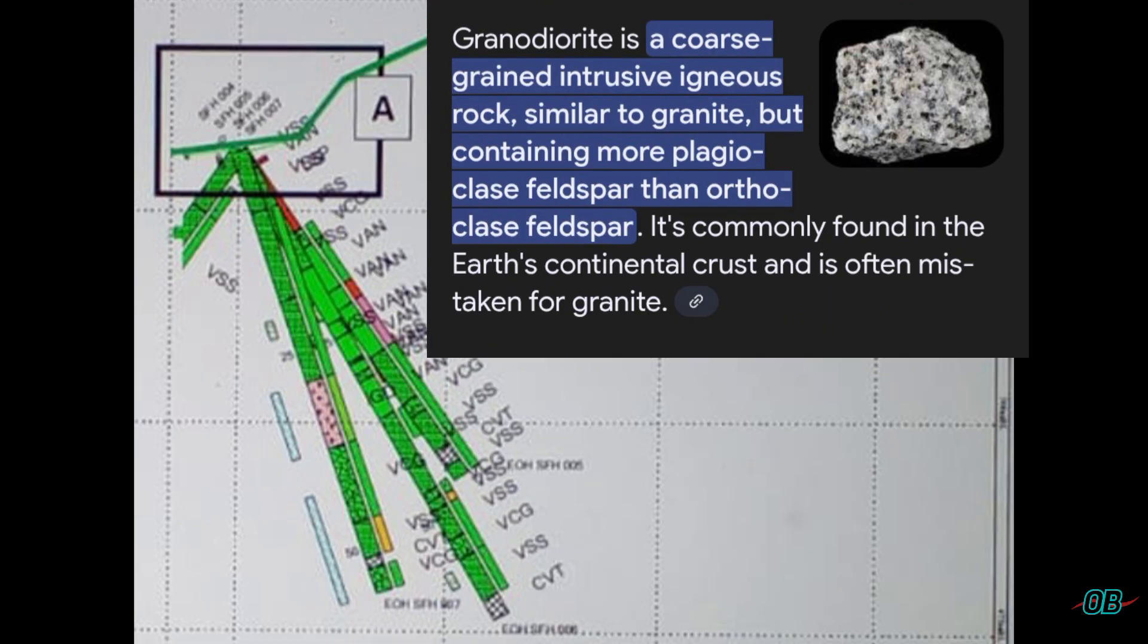Granodiorite: a coarse-grained, intrusive igneous rock, commonly found in the Earth's continental crust.